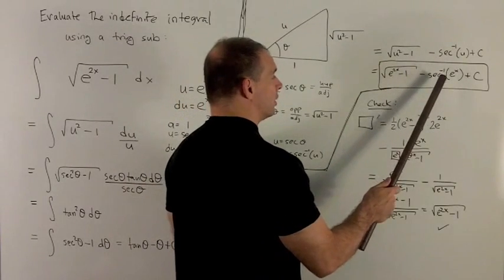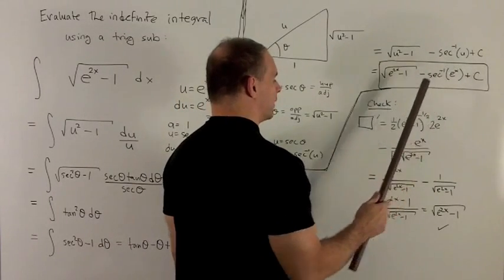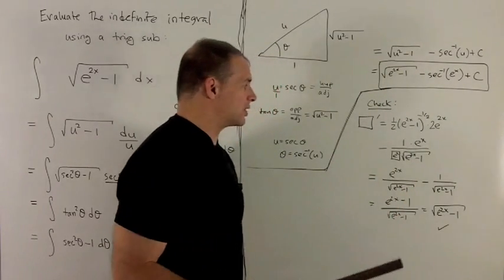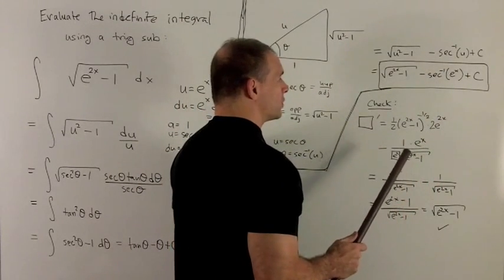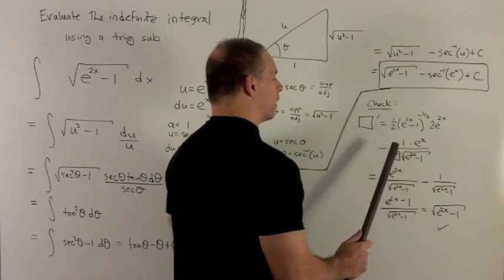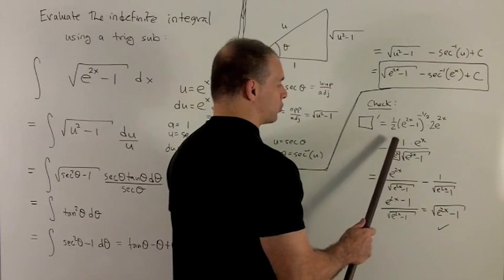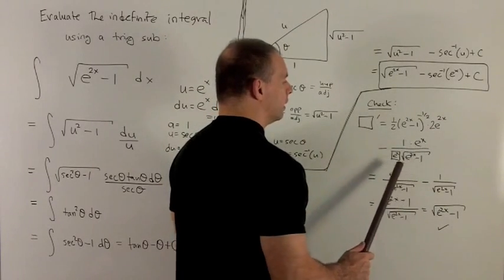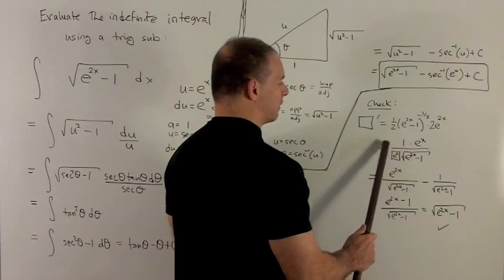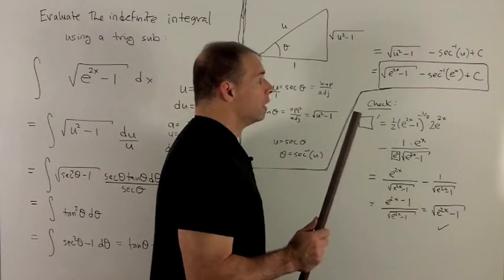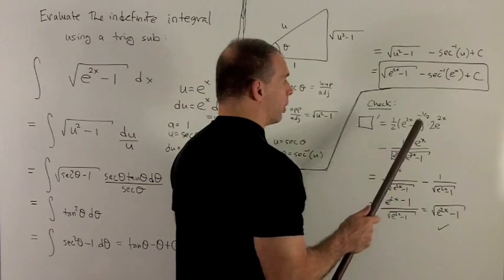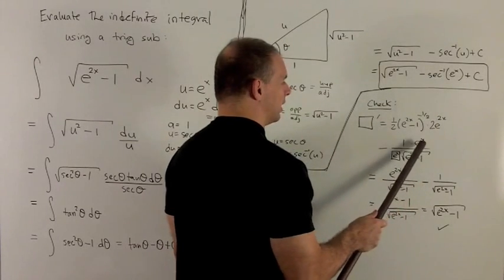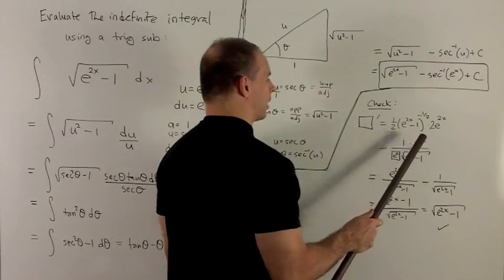For the secant inverse e to the x, taking the derivative of this, let's recall how we do this. I'm going to put a box around the inside, and the rule for secant inverse is it's 1 over box times radical box squared minus 1. In fact, it's actually absolute value box out in front. We're going to stick in the e to the x for the box, and then I get the e to the x I pick up here.